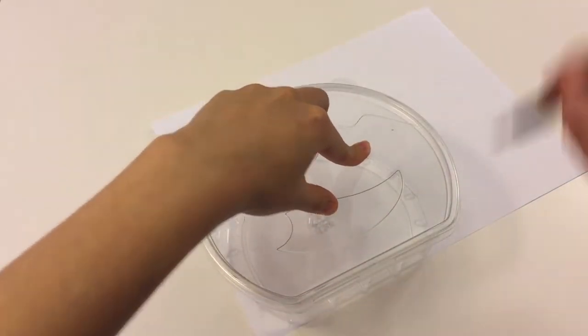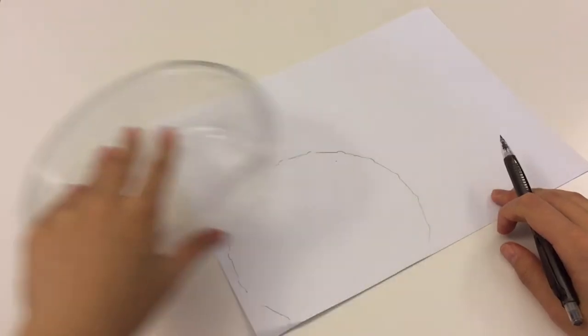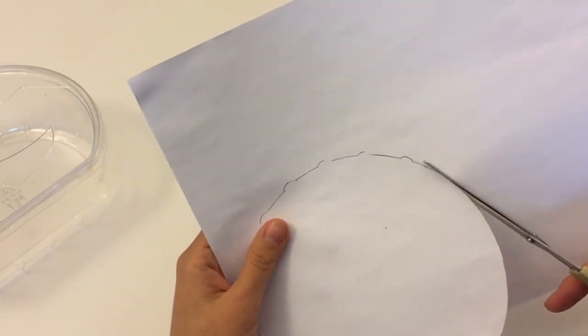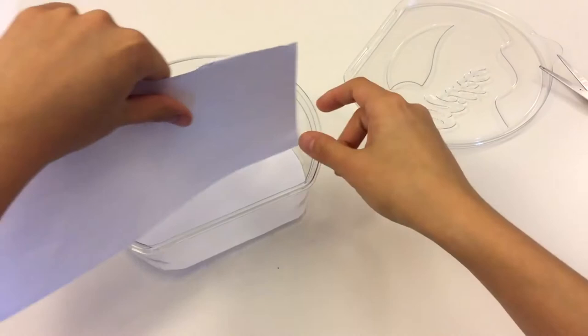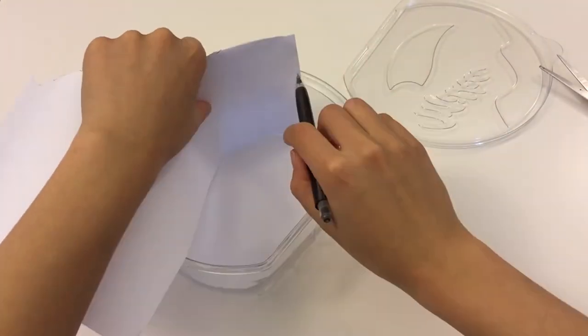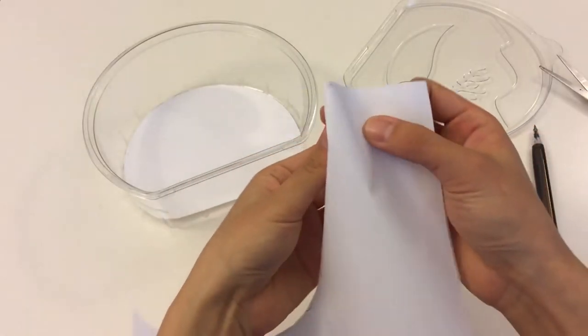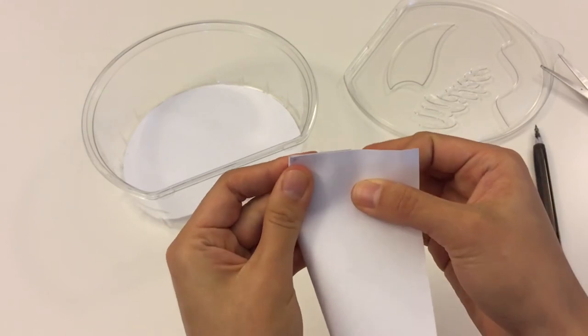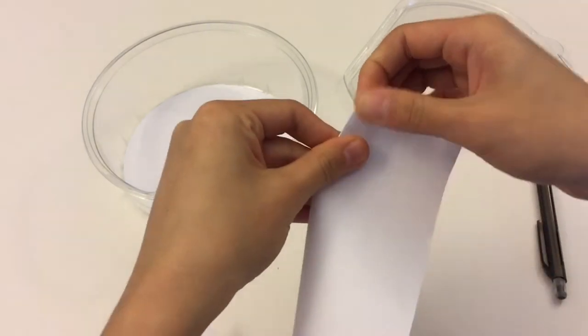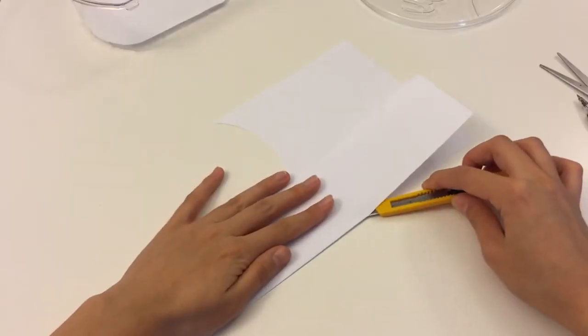My box is transparent so first thing I'm going to do is cover it up. The box I'm using is a little odd-shaped. You can use any shape box you want and if it is not transparent you don't have to cover it up, so look for a pretty box around your house and use it for this DIY.